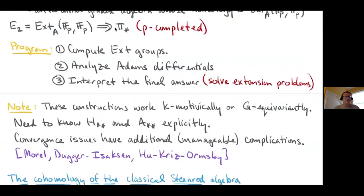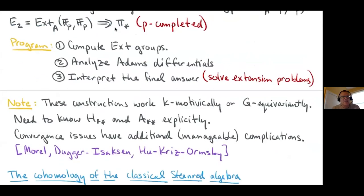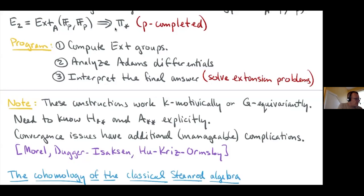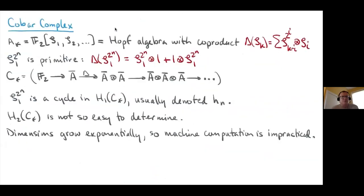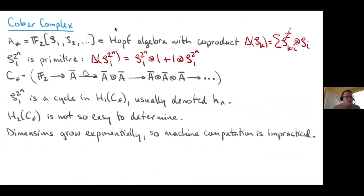What really mattered was that first there's an E2 page you can write down in terms of Ext groups over the Steenrod algebra, which is entirely algebraic. There's a three-step program: first compute the algebraic Ext groups — that's the E2 page — then analyze the Adams differentials in the spectral sequence, and finally interpret the answer by solving hidden extensions. We started talking about how you compute Ext groups and about the cobar complex.